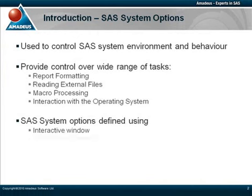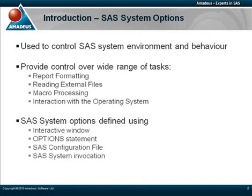There are actually four different ways in which we can work with SaaS system options. The first two affect our current SaaS session, which involve either invoking the interactive window — accessed from our tools options menu — or by typing our options consecutively on an options statement. If we want to define options which work across sessions, providing a default for all different users, we can do that by defining our options either within a SaaS configuration file, or by defining them on the SaaS system invocation command.